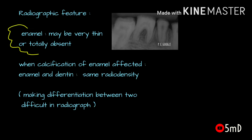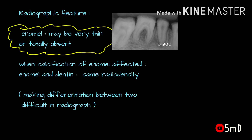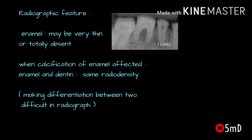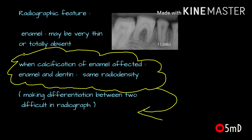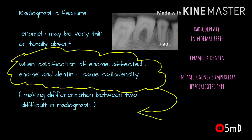Radiographically, the enamel can appear as a very thin layer or sometimes may be totally absent. In other cases where a calcification defect is seen — the hypocalcification type — there could be lesser radio density such that the dentin and enamel appear similar and cannot be differentiated in a radiograph.